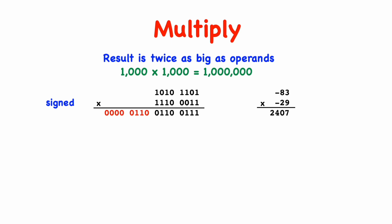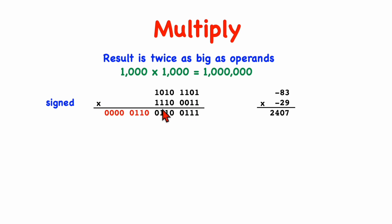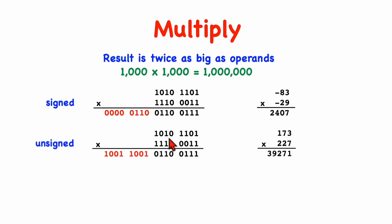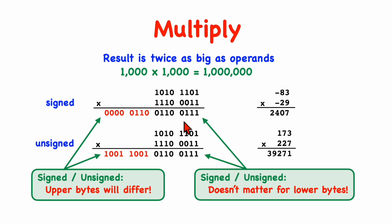I want to begin the discussion of multiplication by talking about the size of the operands and the result. Basically, the result can require twice as much space as the operands. Here's a suggestive example in decimal, and here's an example in binary. Our machine may be a 64-bit machine, but I'm going to use 8 bits in these examples to make them smaller. So here we have two 8-bit numbers, and we're multiplying them, and we get this result when we interpret them as signed numbers. If we interpret these two operands as unsigned values, then we get a slightly different result, and the results differ in the upper bits. This is not just an artifact of these particular numbers, but is true in general.